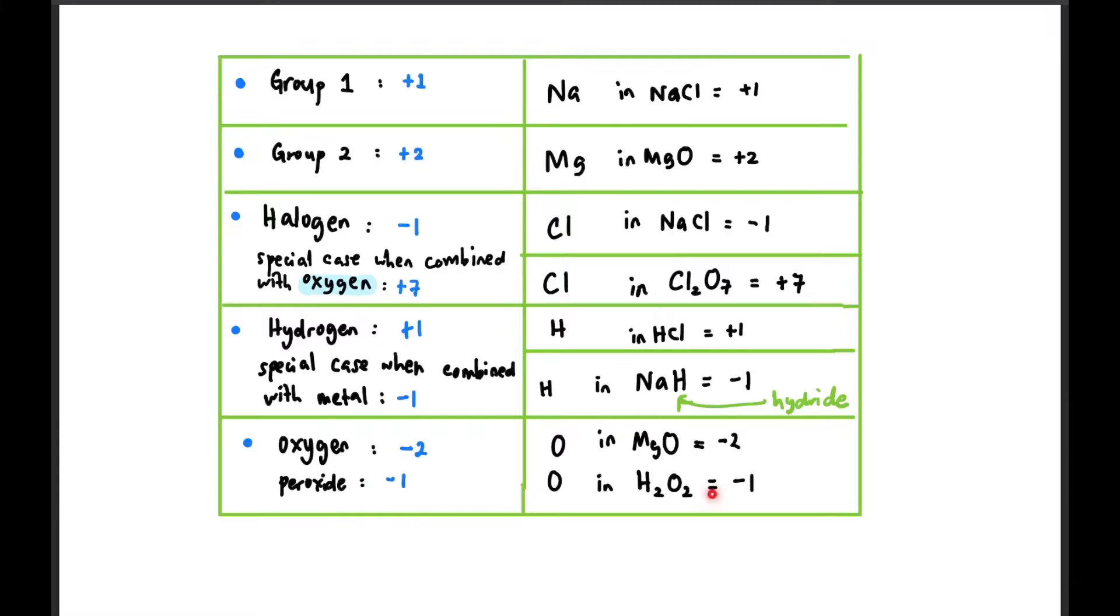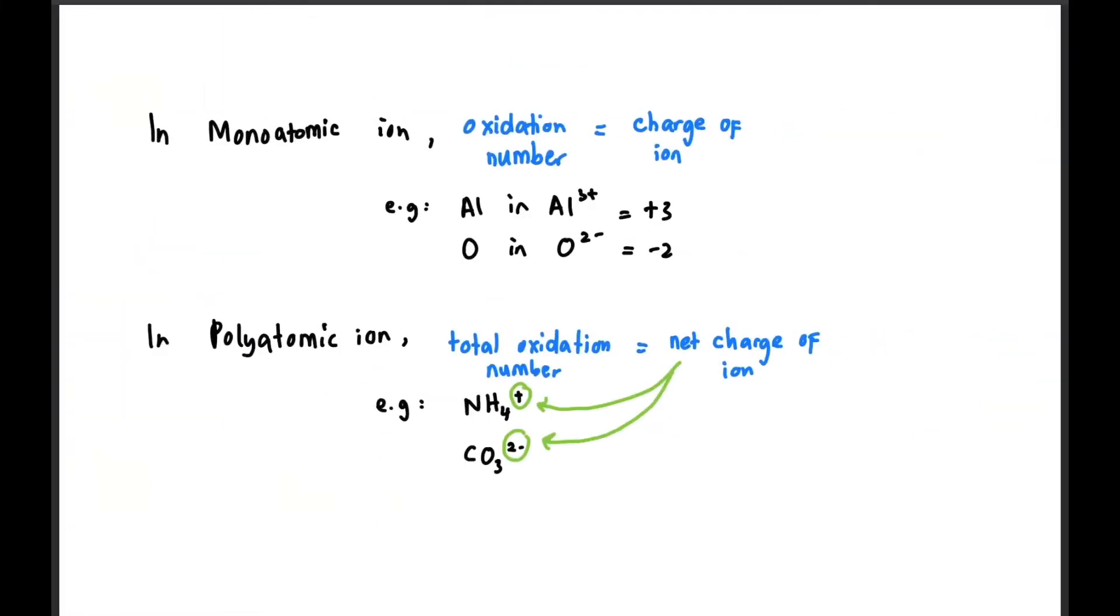So for summary, in monoatomic ions the oxidation number is the charge of the ion if it's monoatomic. For example, Al³⁺, the oxidation number for Al is +3, while O²⁻ is -2. While for polyatomic ions, the total oxidation number is the net charge of the ion.